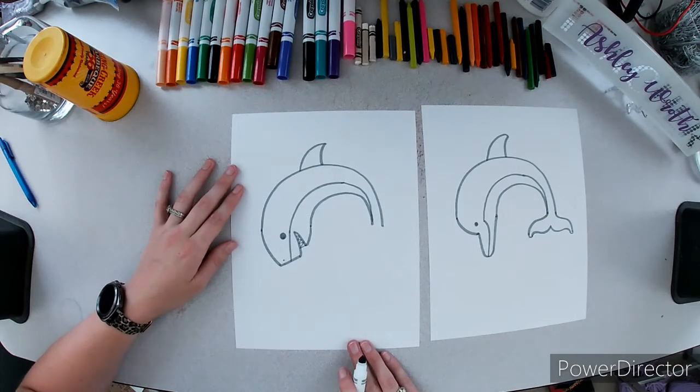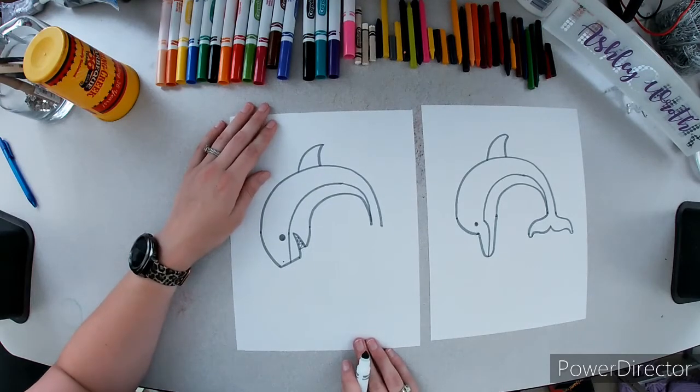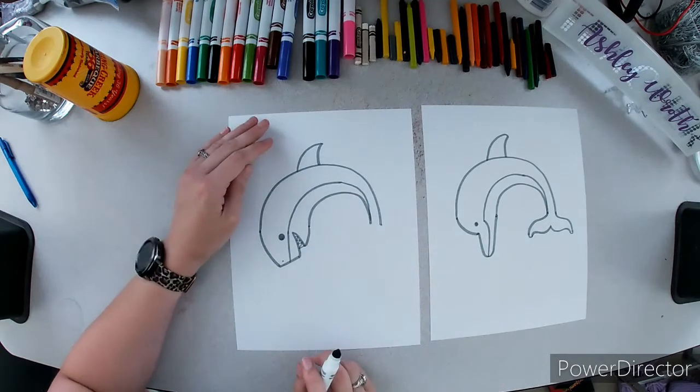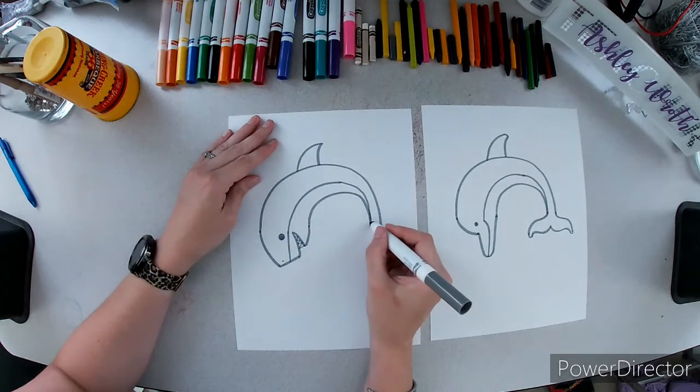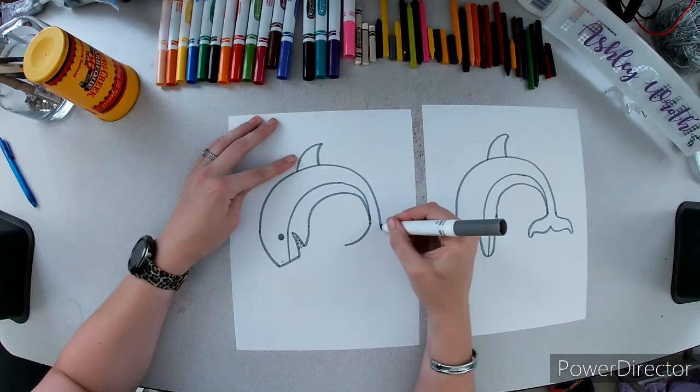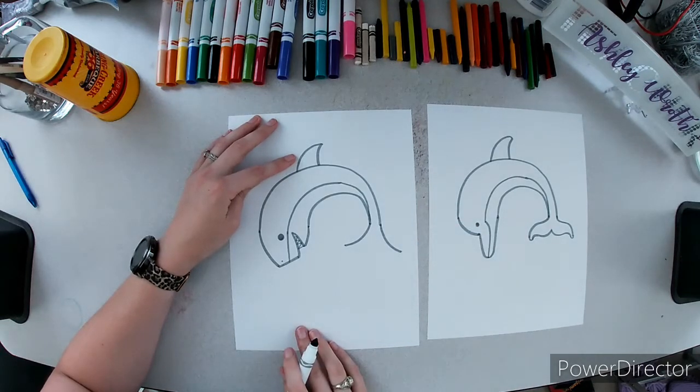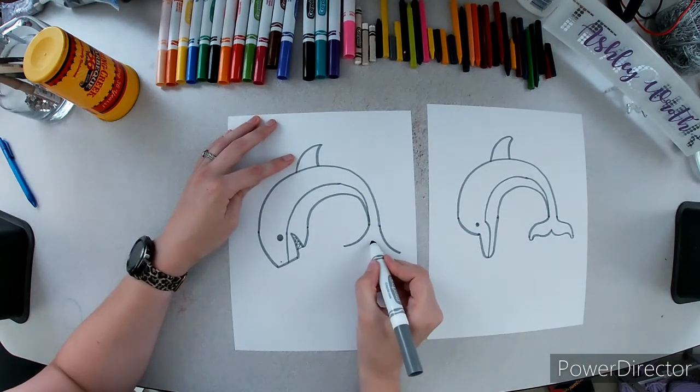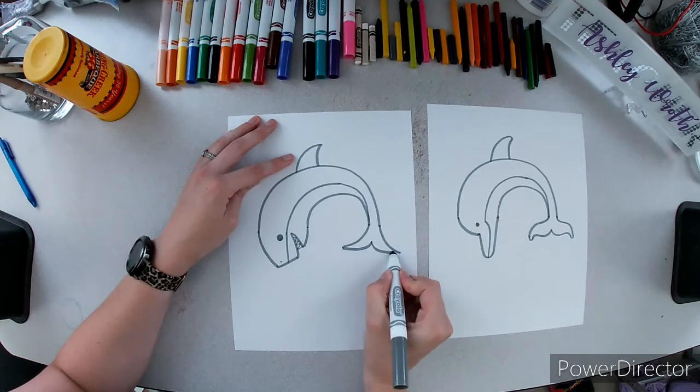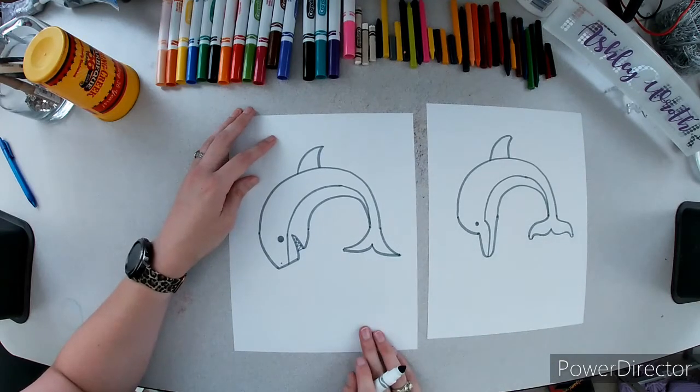Now the fin is going to be pretty similar. We're just going to have it be a little bit more pointy so it looks a little bit more aggressive because sharks are like aggressive. So I'm going to go down and out. Down and out. Then I'm going to start in the middle. Down and swoop. Down and swoop again. So these fins are similar, but not the same.